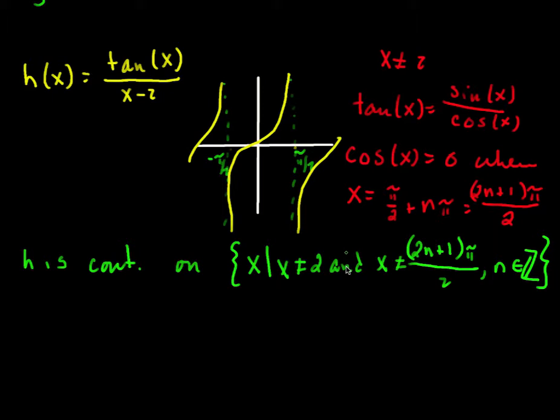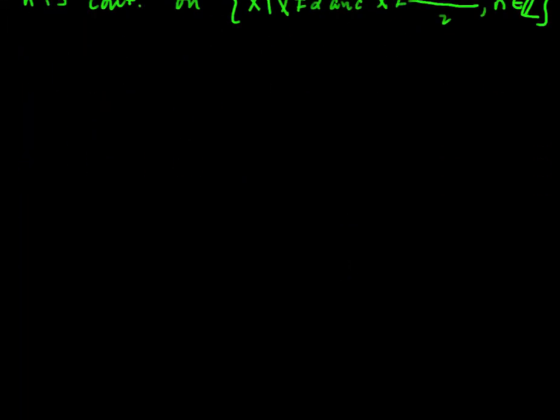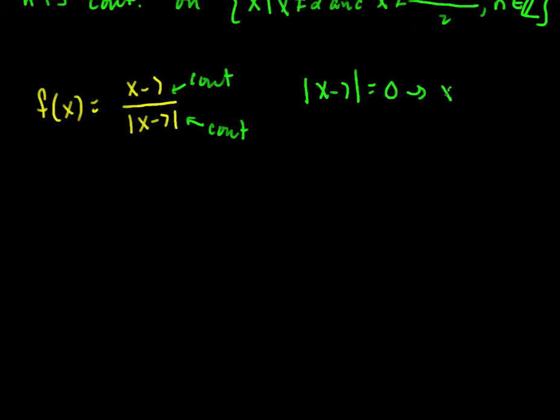Another function we could look at. An example, let's say f of x is x minus 7 over the absolute value of x minus 7. The top is continuous everywhere. It's a nice polynomial. So this is continuous everywhere. This is continuous everywhere. But I am looking at a fraction. And so when is x minus 7 equal to 0? Well, that means x has got to be 7. So we'd have a discontinuity at 7. And so f is continuous on the interval negative infinity to 7 union 7 to infinity.